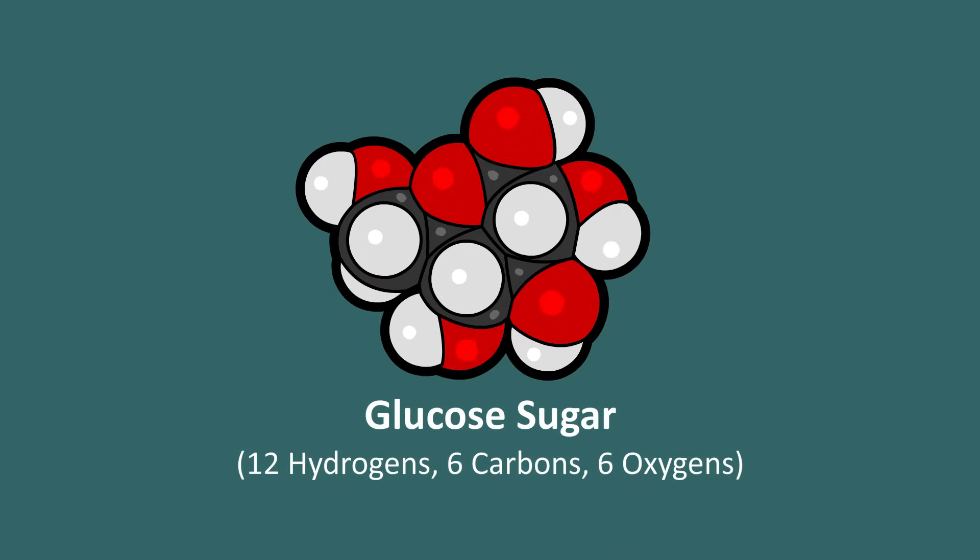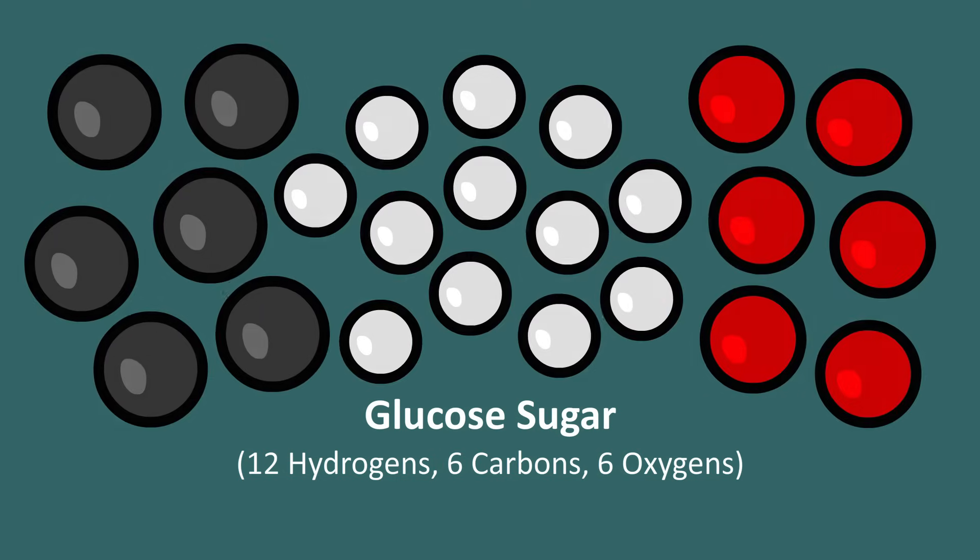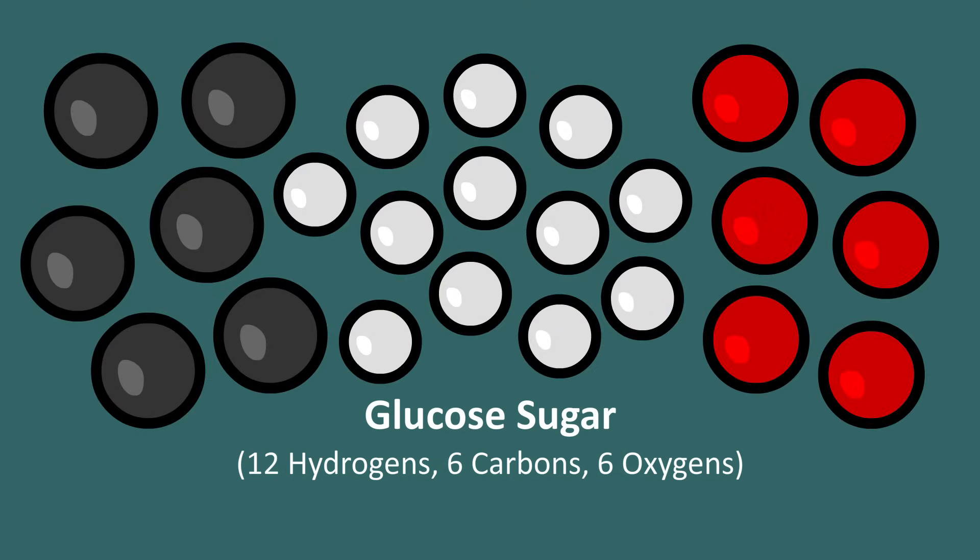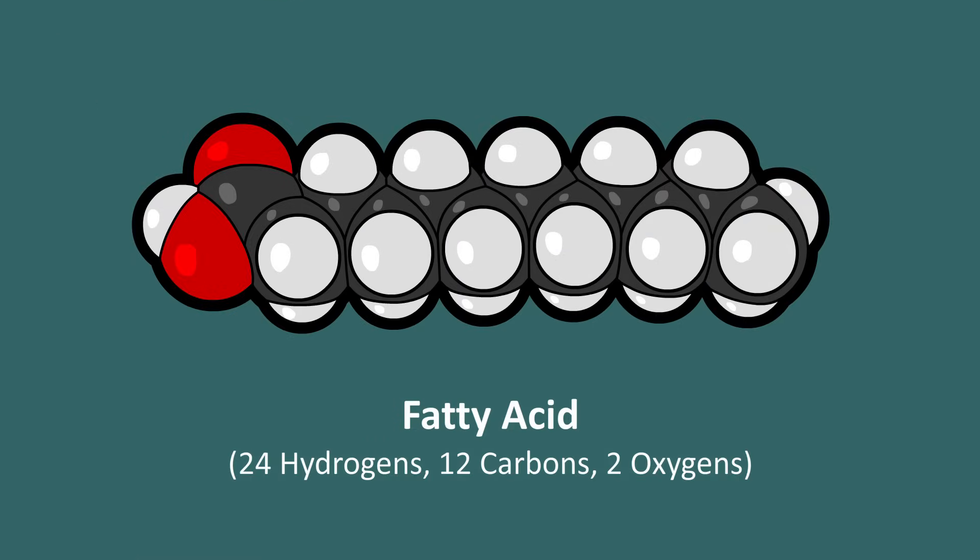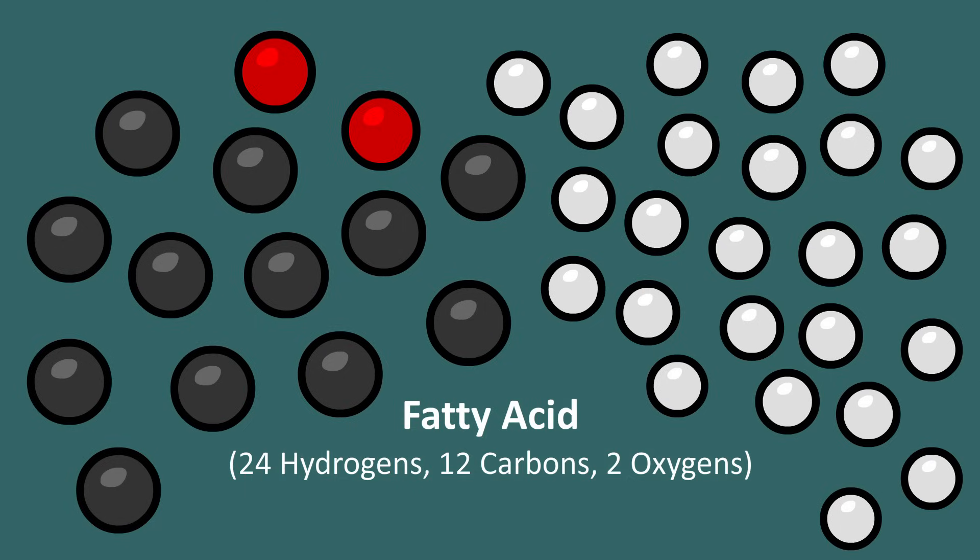A single molecule of the sugar known as glucose is made of 24 atoms, a special arrangement of carbons, hydrogens, and oxygens. A typical fatty acid in the human body may vary in length. This one here is made of 38 atoms.